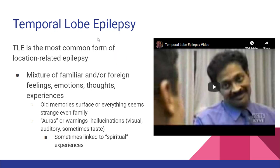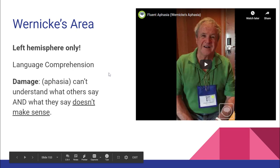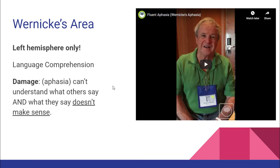Wernicke's area damage is arguably worse than Broca's damage. You can't process incoming speech, and you can't monitor your own speech — but you can still say words fluently. There are videos of a man at a conference responding to questions with completely normal-sounding speech, smiling and waving, but it's pure word salad — random words that don't form coherent meaning. They can produce effective-sounding language but cannot put it together meaningfully because they can't process language at all.